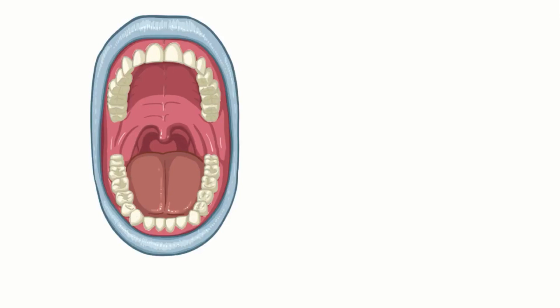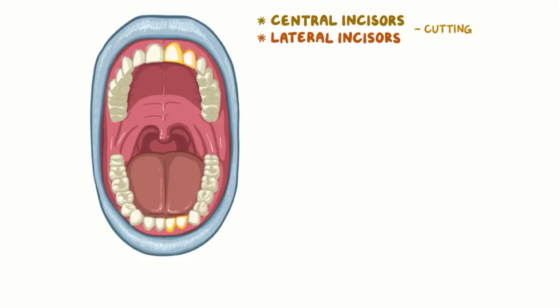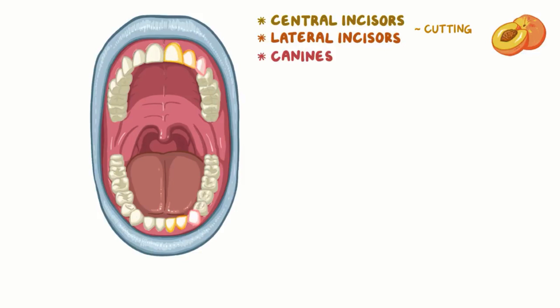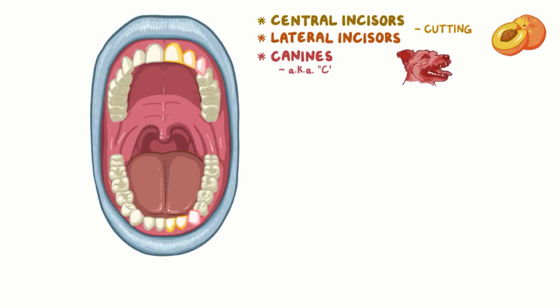The teeth that pair up vertically have the same names. Starting in the center, first there are the central incisors and then the lateral incisors. Incisors are used for cutting into something, like a juicy peach. Next are the canines, which get their name from being the same teeth that are extra long and sharp in dogs. They're also called the cuspids, which comes from the word cusp, meaning point. These are used for gripping and tearing into food, like pieces of meat.